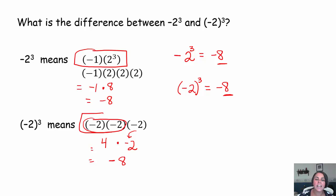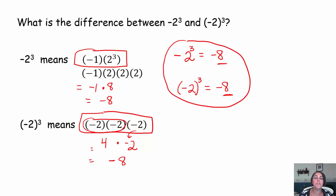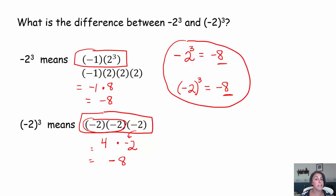But it's important to know that even though you come up with the same result in the end, the meaning of each is very different. These expressions are actually different expressions — they mean something different. There are times we come up with the same answer in mathematics but not for the same reason. Yes, they both end up being equivalent to negative 8, but for very different reasons, and that's important to realize.